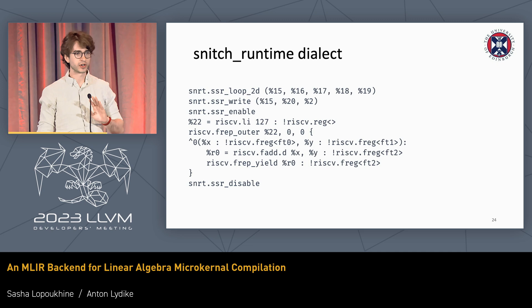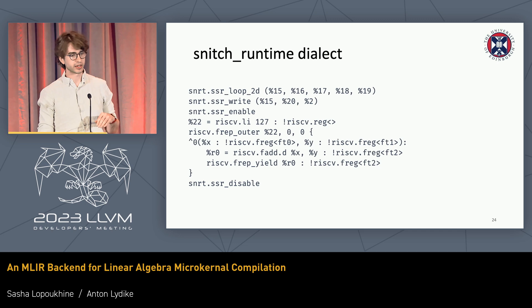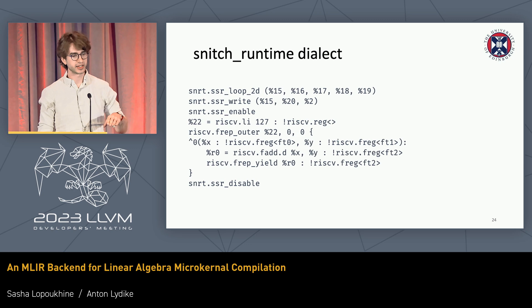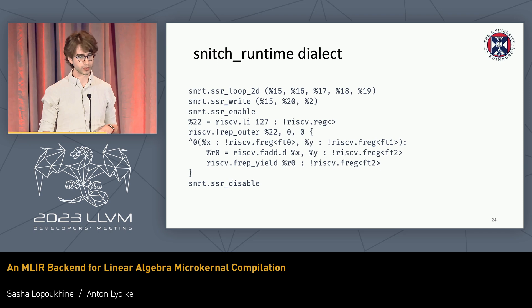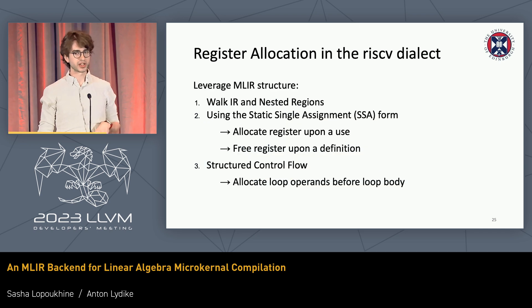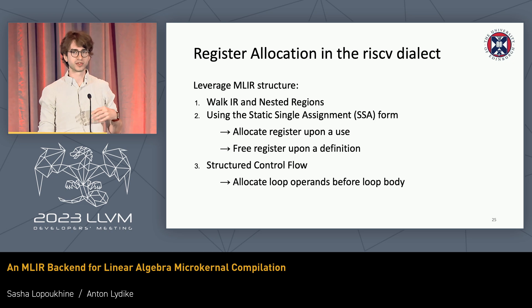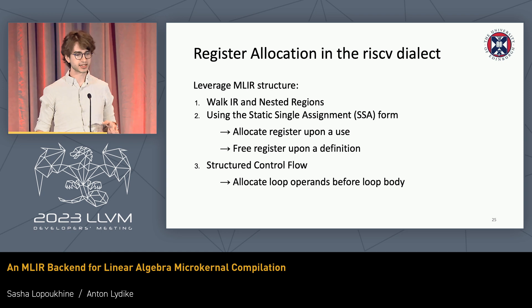Next we can lower to the runtime dialect that corresponds to the C library we saw before. That simplifies things a bit — you can see things that correspond to the C library calls from before. One thing we need to do is register allocation, and that also becomes much, much simpler because of our domain and because of the way we've structured the code — we're still in a structured space and can leverage the SSA structure to make that pretty trivial.